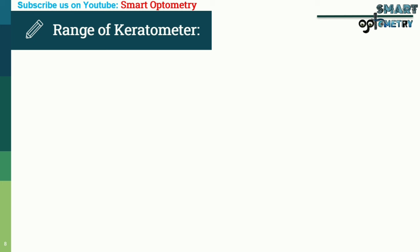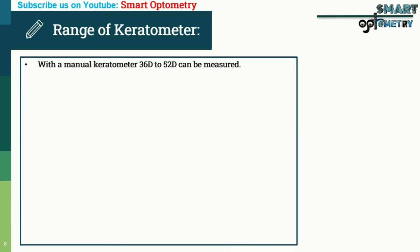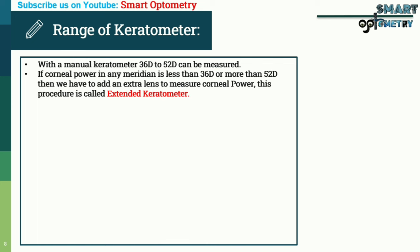Range of keratometer: with a manual keratometer, 36 diopters to 52 diopters can be measured. If corneal power in any meridian is less than 36 diopters or more than 52 diopters, we need to add an extra lens to measure corneal power. This procedure is called extended keratometry. Remember, these extra lenses are placed before the eyepiece, not in front of the patient's eye.